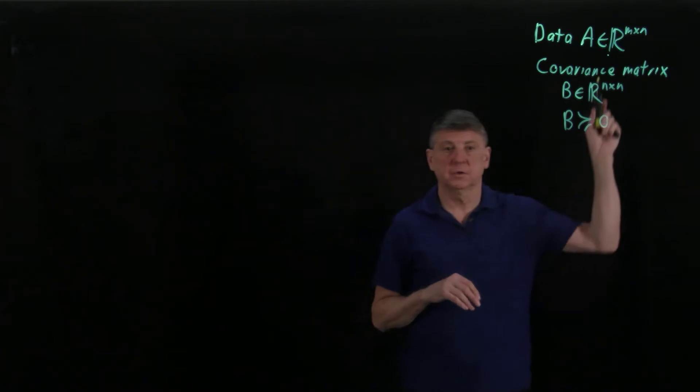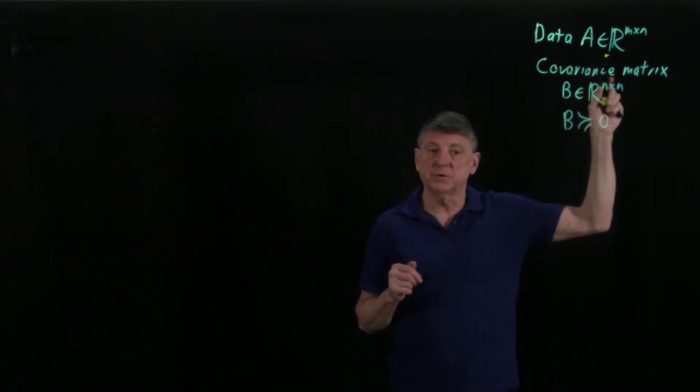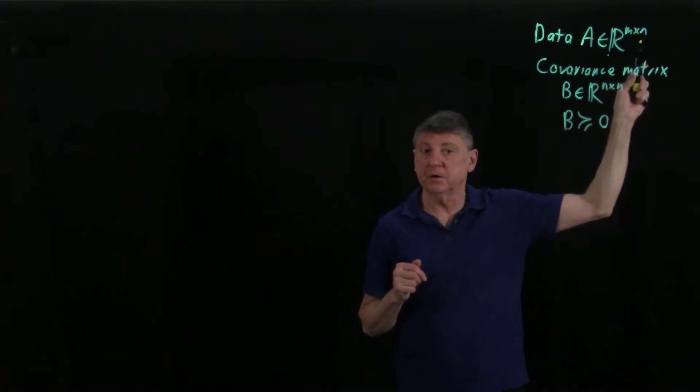Let's review our terms first. Our data are in a matrix A, and these are real numbers. There are m observations, so there are m rows, and there are n variables, so there are n columns.